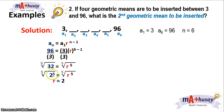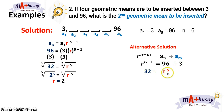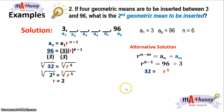Alternative solution: take 96 and divide it by 3, then get the fifth root. The exponent 5 comes from subtracting the position of 96 and the position of the first term: 6 minus 1 is 5. So, getting the fifth root of both sides, you get r equals 2.